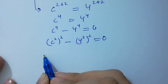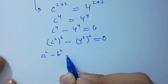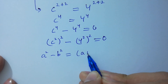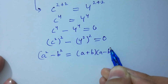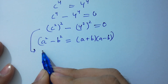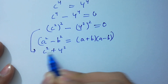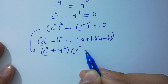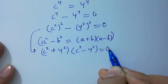Since a squared minus b squared equals (a plus b)(a minus b), it will be here: we have (c squared plus 4 squared)(c squared minus 4 squared) equal to 0.